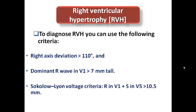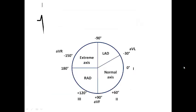The criteria for diagnosing right ventricular hypertrophy are: right axis deviation of more than 110 degrees, a dominant R-wave in V1 more than 7 mm tall, and the Sokolov voltage criteria of R-wave in V1 plus S-wave in V5 exceeding 10.5 mm. Starting with right axis deviation — if lead I is predominantly negative and lead aVF is positive, the axis is directed to the right lower quadrant, indicating right axis deviation.